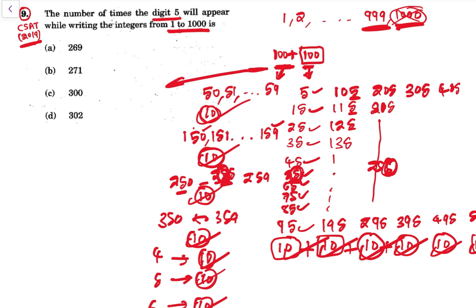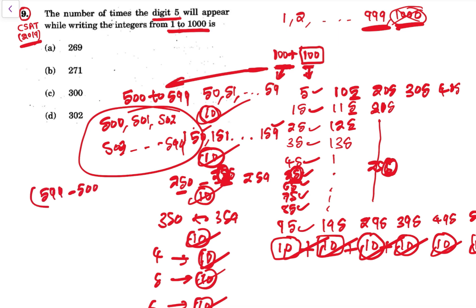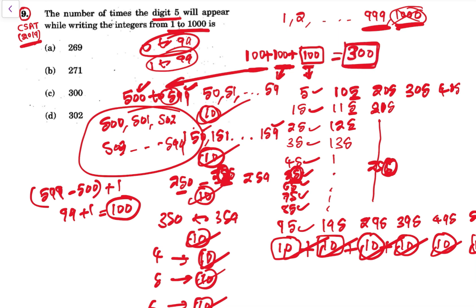Then in the hundreds place where 5 happens, that is from 500 to 599. So there are how many numbers? See 500 to 599, we can say that is last digit minus first number plus 1. So 599 minus 500 plus 1, that is 100. So that is 100 fives in hundreds place. So overall that is 300 fives. So 300 is the answer.